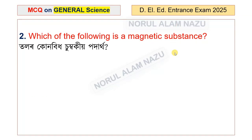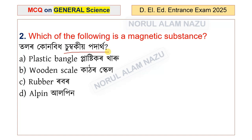Which of the following is a magnetic substance? The options are: plastic bangle, plastic car, wooden scale, rubber, and alpine. Options A, B, C are given.